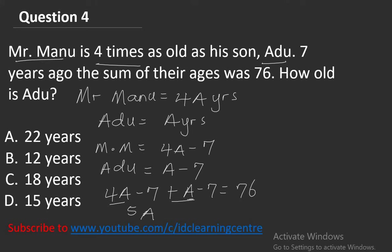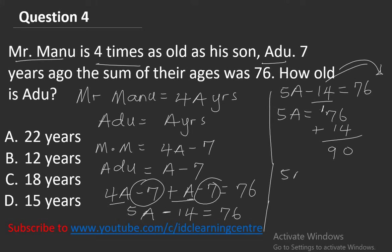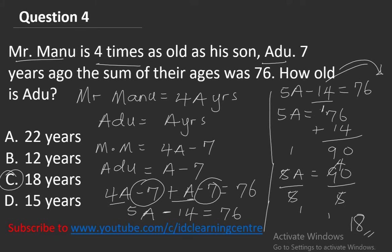Please don't forget to subscribe to this channel if you haven't done so. Minus 7 plus minus 7 equals minus 14. So 5A minus 14 equals 76. Moving minus 14 to the right: 5A equals 76 plus 14 equals 90. Dividing both sides by 5: A equals 18. Adu is 18 years old and the correct option is C.